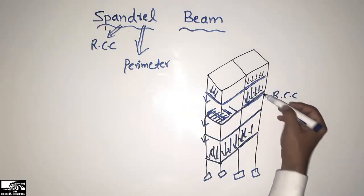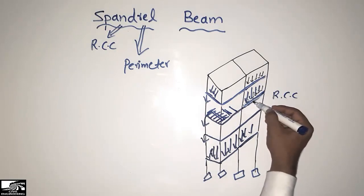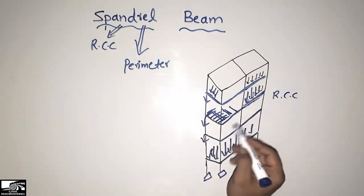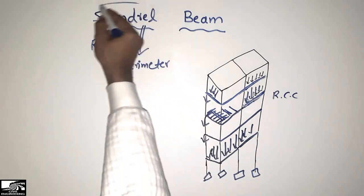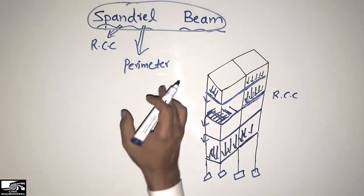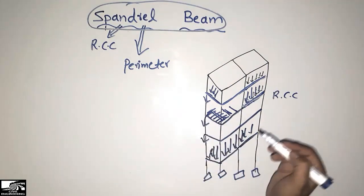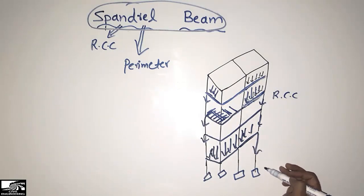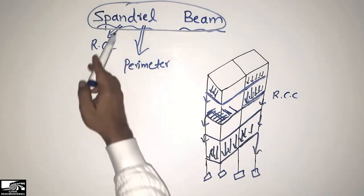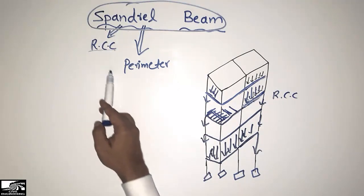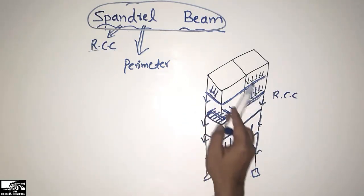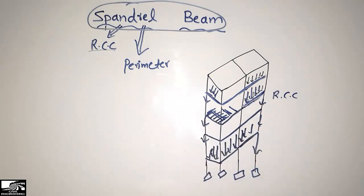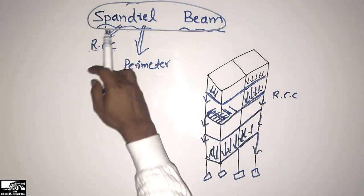The wall load is coming on the slab — the slab may be insufficient to take the load and may be at risk of collapse. So what we do is we design the spandrel beam on the exterior portion of the building. The beam placed on the exterior or perimeter of the building is given the special name 'spandrel beam.' It is an RCC beam mainly designed to take the wall and slab load and transfer it to the column, and from the column to the foundation.